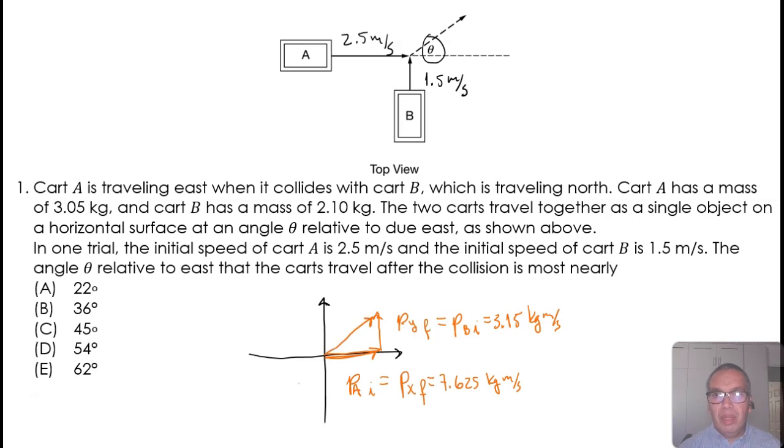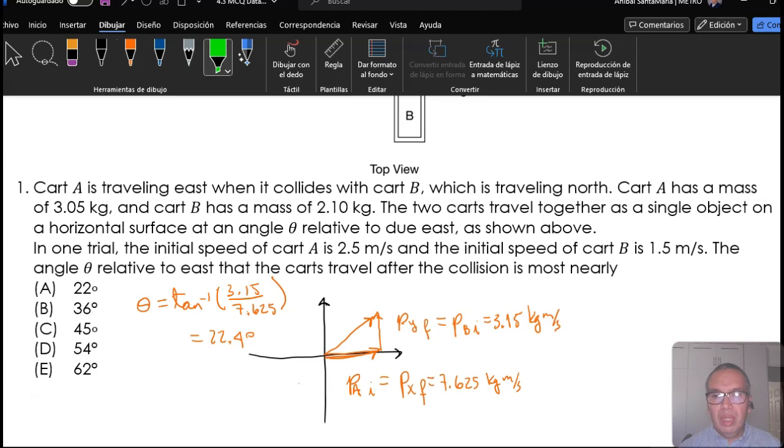Simple trigonometry will allow us to calculate that using the inverse tangent of 3.15 over 7.625. This is equal to 22.4 degrees, which is closest to option A.